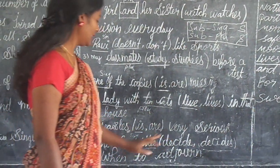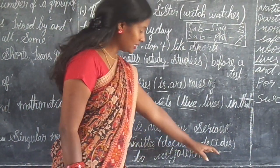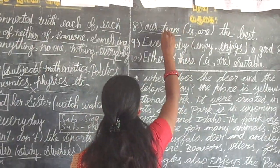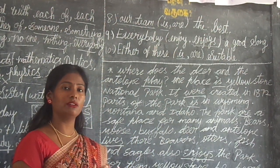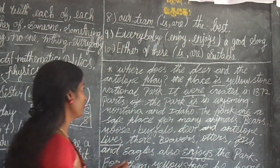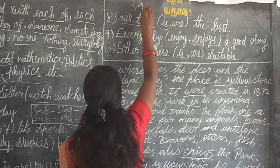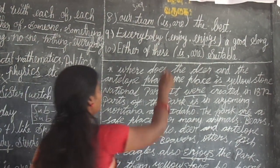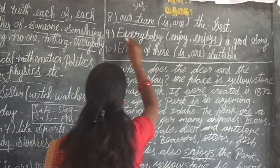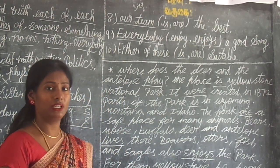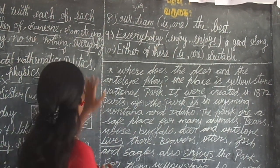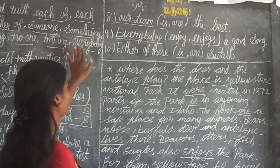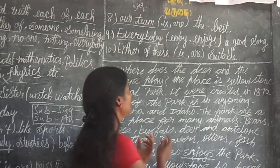Our team is a group, so the subject is singular and we use a singular verb. Everybody, everything, and nothing are all singular — so the verb is singular. The answer is correct.